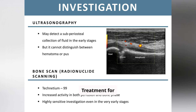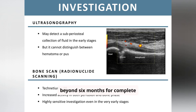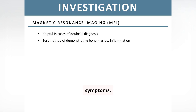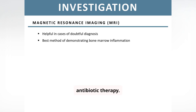Treatment for osteomyelitis includes pain management, joint splinting, and antibiotics to control infection spread, with therapy often extending beyond six months for complete resolution. Surgical drainage is needed if antibiotics fail to resolve symptoms, and clinical improvement along with normalization of inflammatory markers guide cessation of antibiotic therapy.